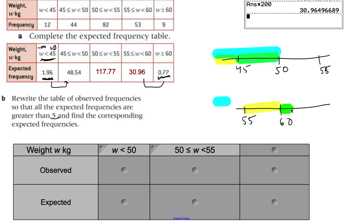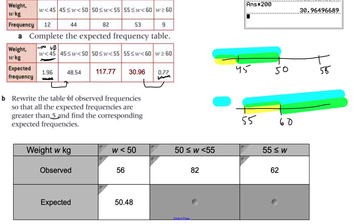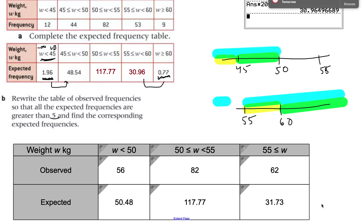So the last category becomes anything 55 and above. For the observed frequencies, we combine 12 plus 44 to get 56, keep 82 as is, and add 53 plus 9 for the last group. For the expected frequencies, you can either recalculate using normal CDF for the new intervals or simply add the corresponding values from the original table. This gives us the new combined table to use going forward.